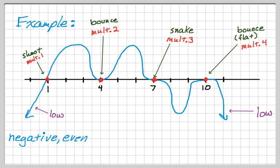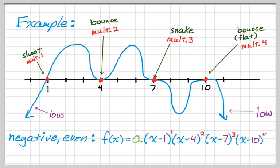From this I can write the polynomial. f of x equals a times (x minus 1) to the first, times (x minus 4) squared, times (x minus 7) cubed, times (x minus 10) to the fourth. I know a is less than 0, and overall the degree is 10. To find the exact value of a, we'd need a point on the polynomial. Those are three examples of things you can do with multiplicity, end behavior, and the graphs of polynomials. Hope you found this helpful, and good luck.